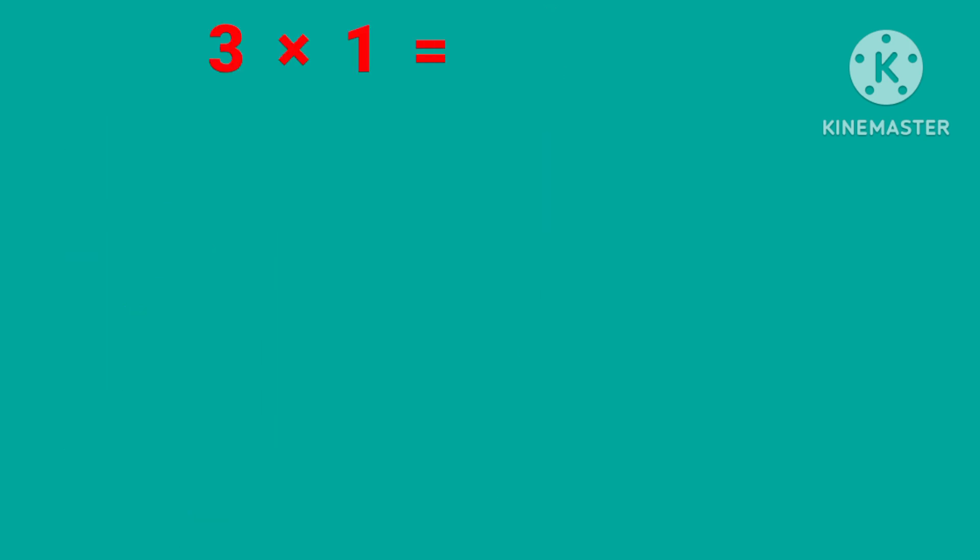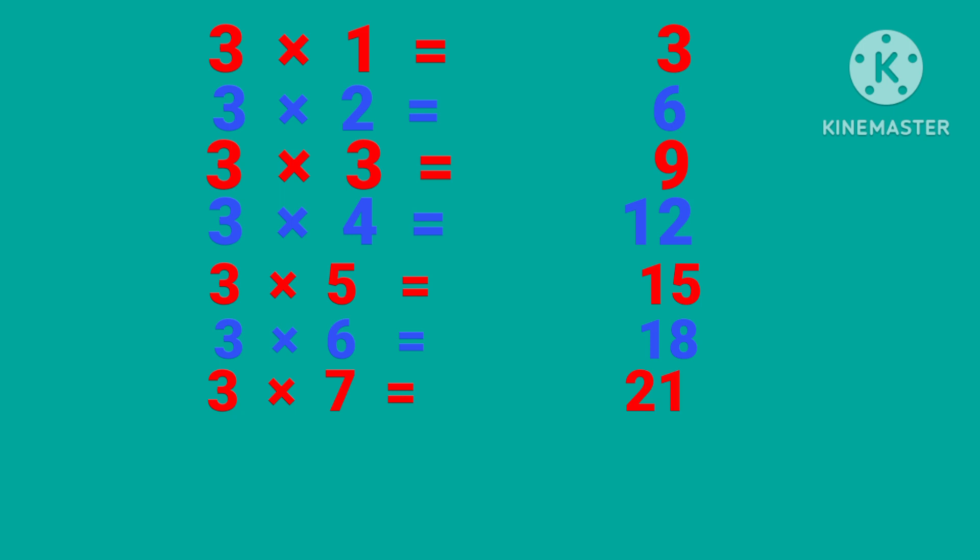3 times 1 is 3, 3 times 2 is 6, 3 times 3 is 9, 3 times 4 is 12, 3 times 5 is 15, 3 times 6 is 18, 3 times 7 is 21, 3 times 8 is 24, 3 times 9 is 27, 3 times 10 is 30.